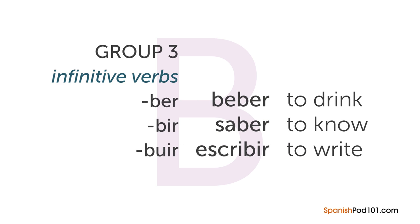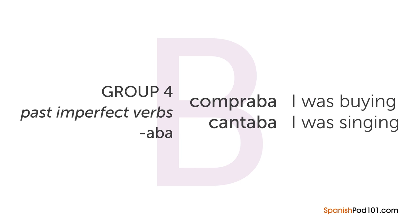Third, all verbs whose infinitive forms end in BER, BIR, and BUIR — for example, 'beber' meaning to drink, 'saber' meaning to know, and 'escribir' meaning to write. Fourth and last, all past imperfect verbs whose first conjugation ends in ABBA — for example, 'compraba' meaning 'I was buying,' or 'cantaba' meaning 'I was singing.'